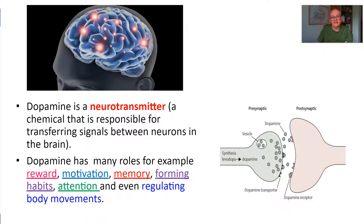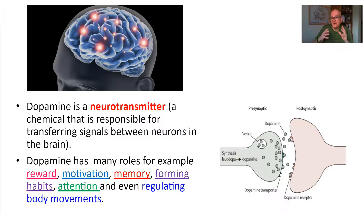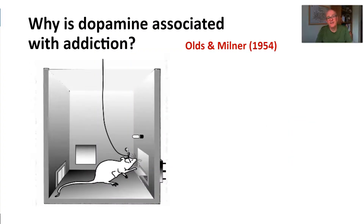How active the brain is in certain areas will influence addictive behaviors. Dopamine is involved in rewards, motivation, forming memories, habits, attention, and even how our body moves. It really is quite an important neurotransmitter and is central to addictive behaviors.